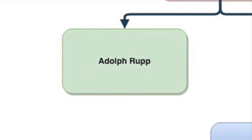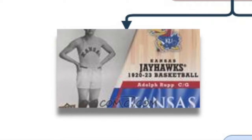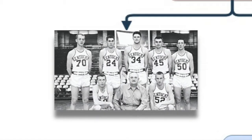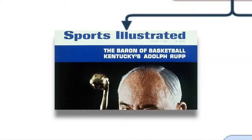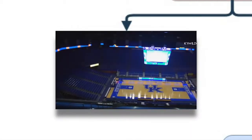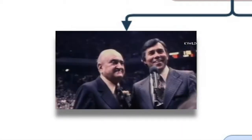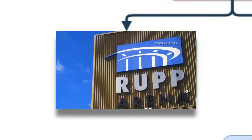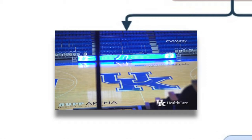One of which being legendary Adolph Rupp. A player at Kansas in the early 20s, he would soon after get the head coaching job at Kentucky, where he would stay for 41 years. Winning four national titles, six Final Four appearances, and totaling 876 wins in his collegiate coaching career, where he currently is ranked fifth all-time, he left his impression on another great storied college basketball program of Kentucky. The 23,000-seat arena where the Kentucky basketball team plays to this day is called Rupp Arena, named after Rupp himself.